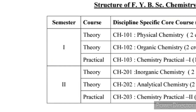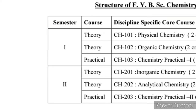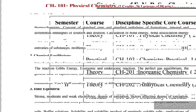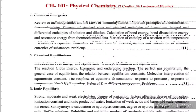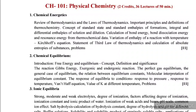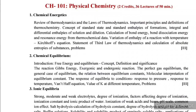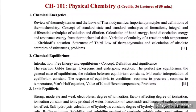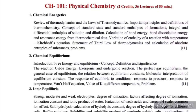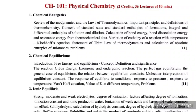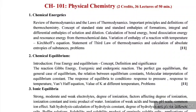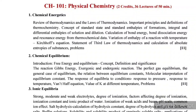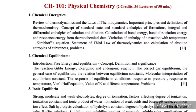In Physical Chemistry there are 3 chapters. The first one is Chemical Energetics, the second one is Chemical Equilibrium, and the third one is Ionic Equilibria.